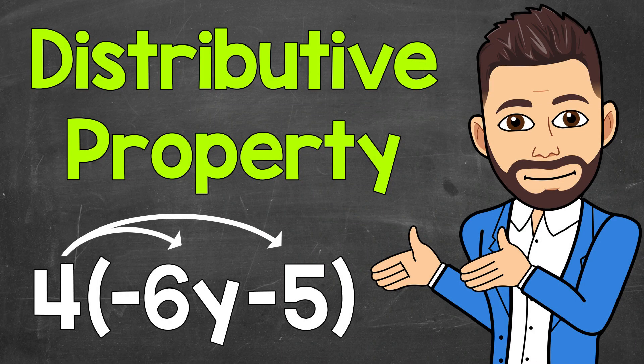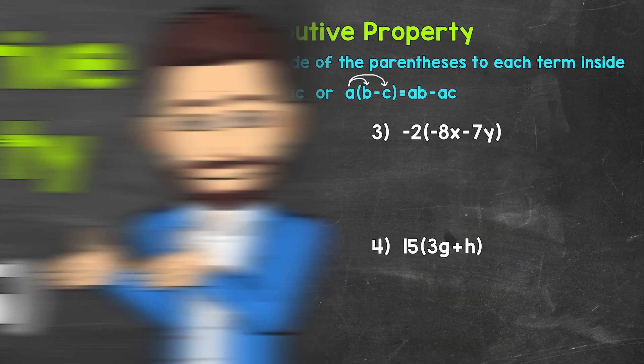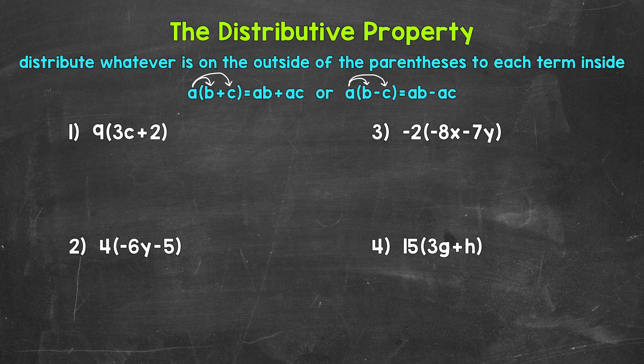Welcome to Math with Mr. J. In this video, I'm going to cover how to simplify algebraic expressions using the distributive property. The distributive property can help us remove parentheses within algebraic expressions. If we have unlike terms within parentheses, we can't combine them. We use the distributive property to remove the parentheses, and then we can continue to simplify if possible.